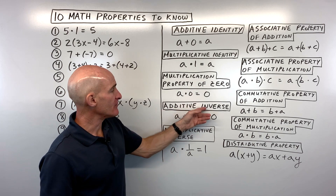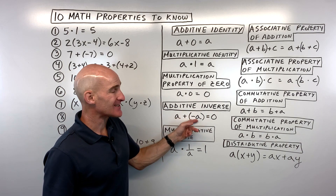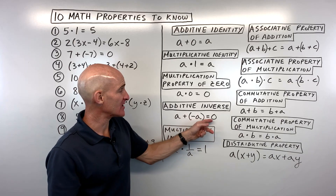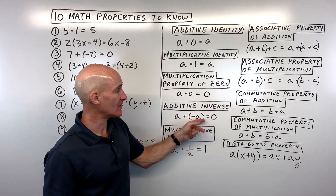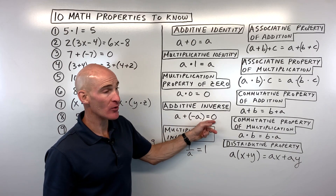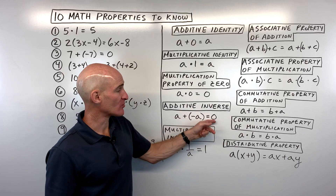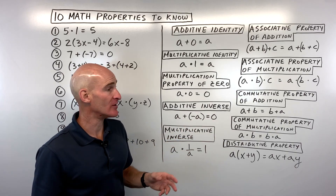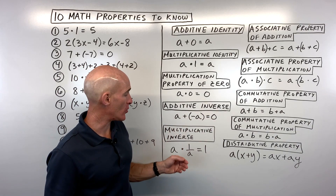The additive inverse is when you take a number plus its opposite sign and get zero. For example, three plus negative three is zero, or negative three plus positive three is zero. When you add a number's inverse, you get zero.